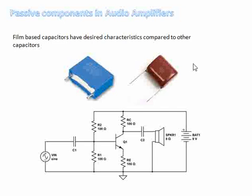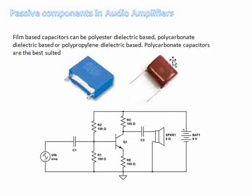The first type of capacitors that come to mind are film-based capacitors, which are plastic film based capacitors where the dielectric is a plastic kind of material. Capacitors categorized under film-based include polystyrene dielectric, polycarbonate dielectric, and polypropylene dielectric based capacitors. Any of these capacitors have good THD and low dissipation factor characteristics, which is why they are found used in audio amplifiers.